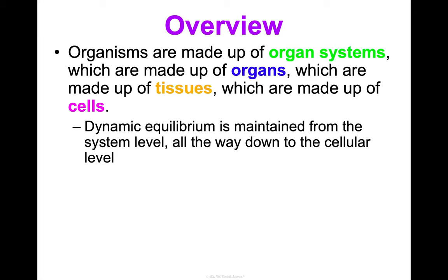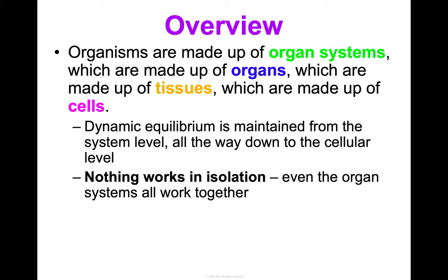As we discussed in Concept One regarding homeostasis, a dynamic equilibrium is maintained from the system level — at the organ system level — all the way down to the cellular level. It is maintained at all these different scales, from large to small. In order to maintain that equilibrium, nothing inside of you works in isolation; even the organ systems and cells are all working together.